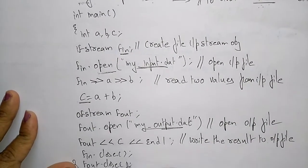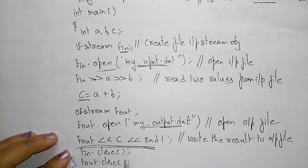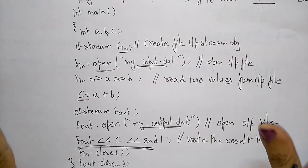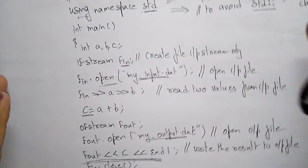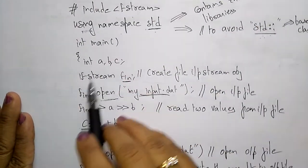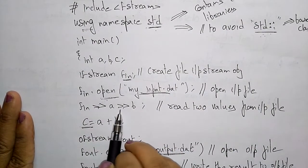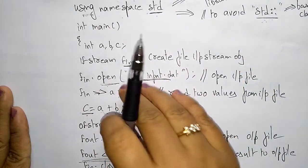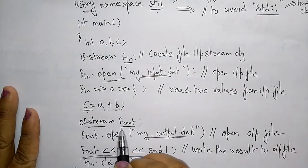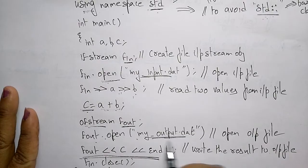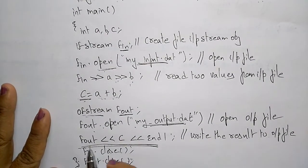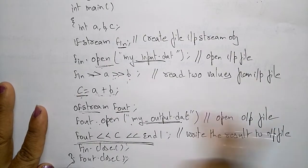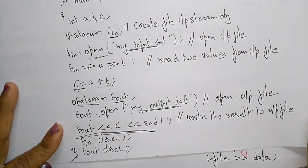After writing, close both files: fin.close() and fout.close(). This closes the input file and this closes the output file. Before program termination, close whatever files you opened. So in this example, we opened an input file, read values a and b, computed a + b storing the result in c, then opened an output file and wrote the result. That's the file input/output example with C++.